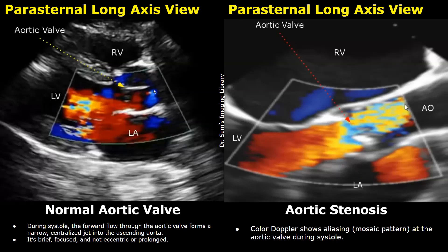In aortic stenosis, especially moderate and severe stenosis, color mixing will be seen at the aortic valve and in front of it during systole. You will see many bright colors — a mixture of yellow, orange, and blue — at the aortic valve during systole.